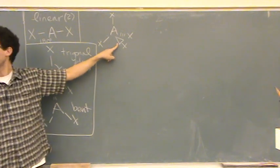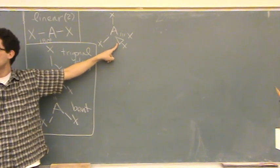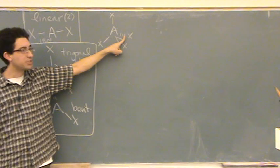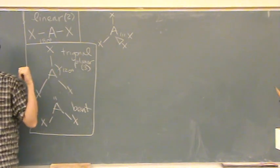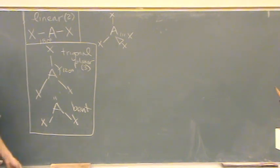A wedge that looks like a triangle means it's coming towards you, a dash means it's going into the board away from you. Okay, that's four groups. This is tetrahedral.